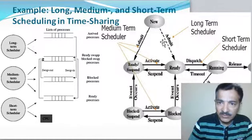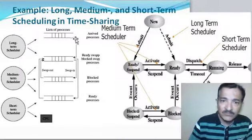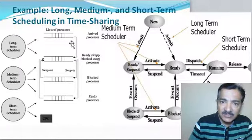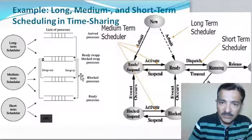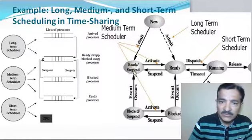The long term scheduler — as you can see here — this is a new process which has arrived, and this is a list of new processes. From this queue, you can see it is being copied to the ready suspended queue. And if there are no processes in the ready suspended queue, it will be directly copied to the ready queue.